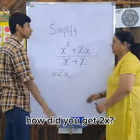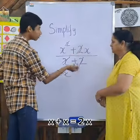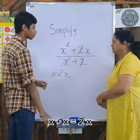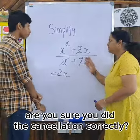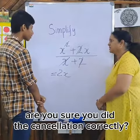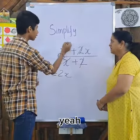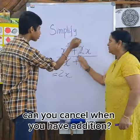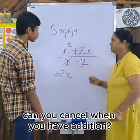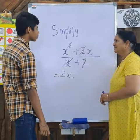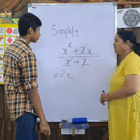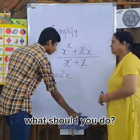How did you get the 2x? x plus 2x. Are you sure you did the cancellation correctly? Yeah. Can you cancel when you have addition?